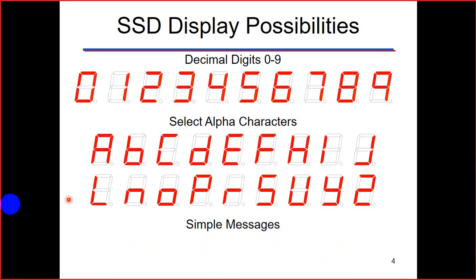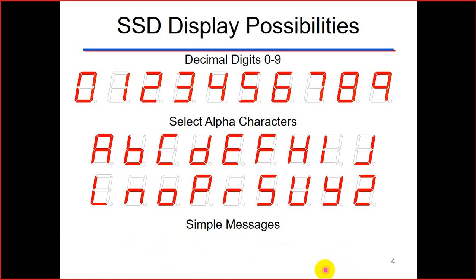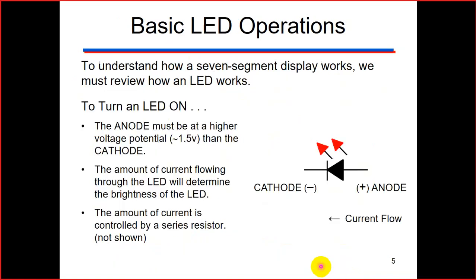Here we have a sample message displaying 'cold soda' — so by this method you can display some messages using the seven segment display. Now let's look at the basic LED operation.